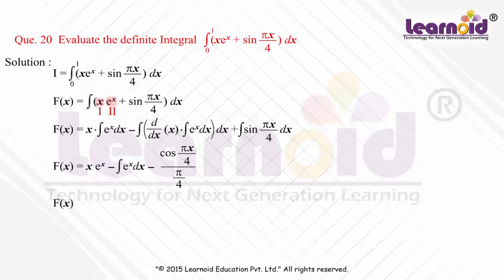f(x) equals x·e^x minus e^x minus (4/π)·cos(πx/4).